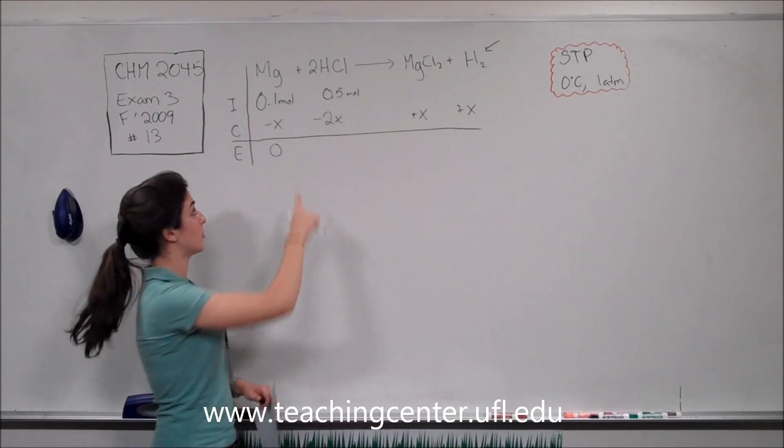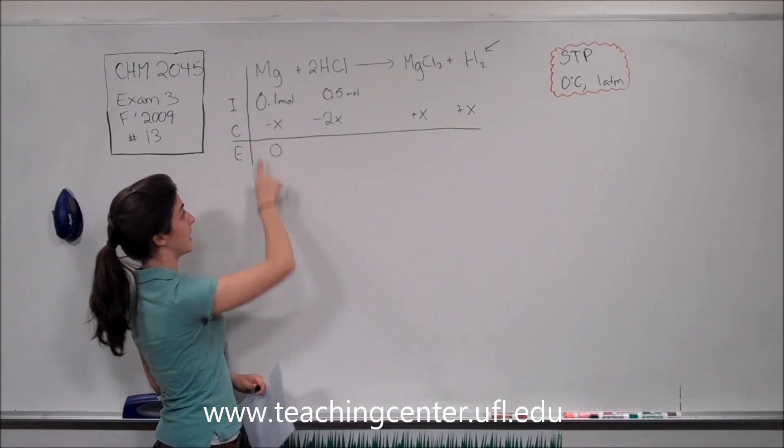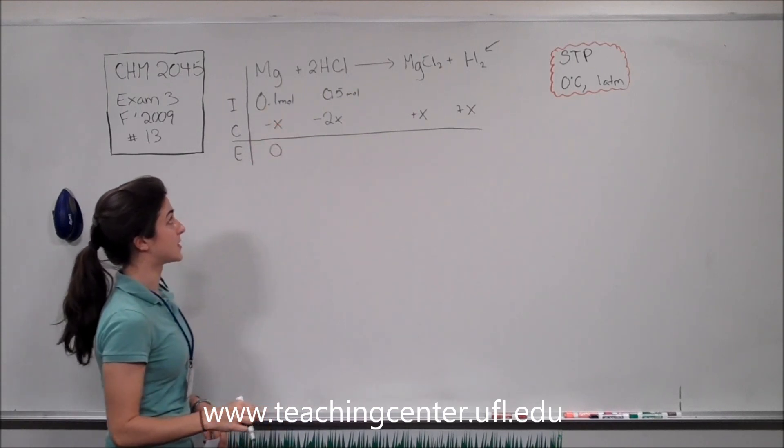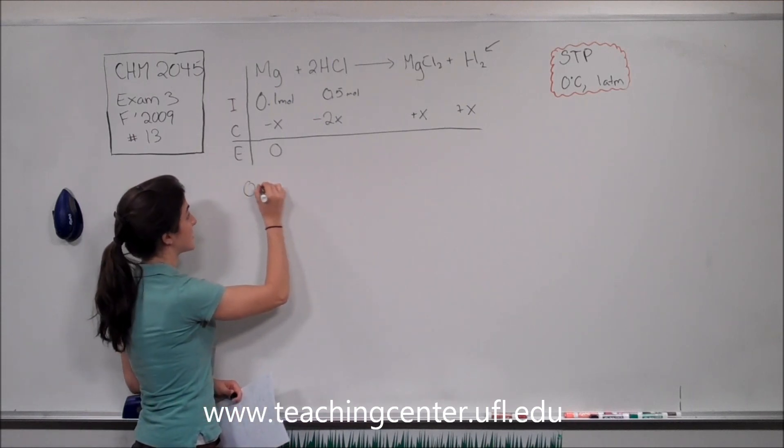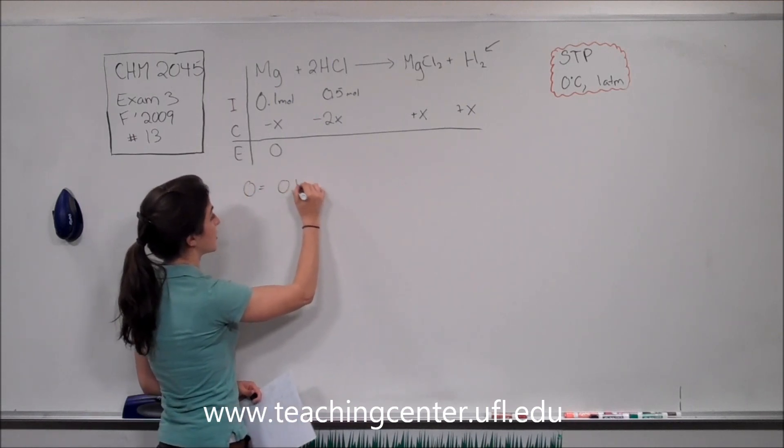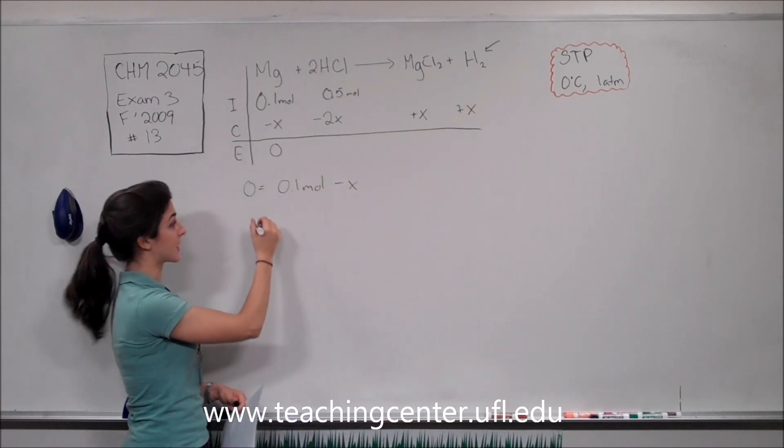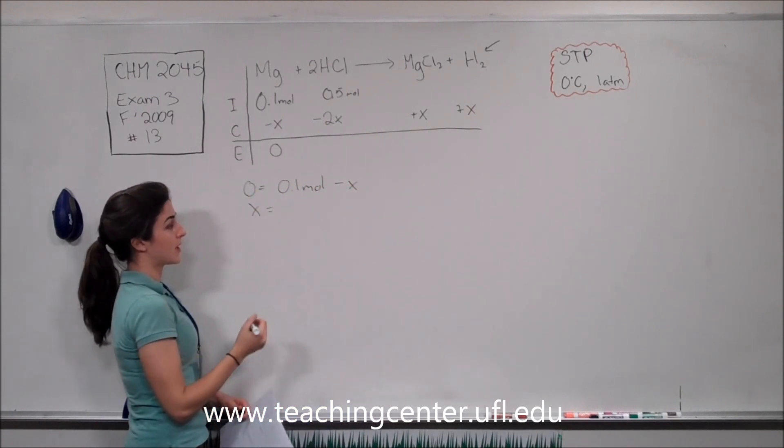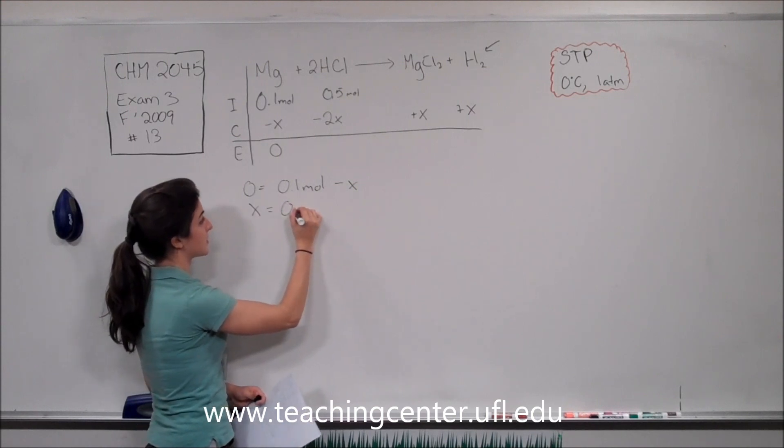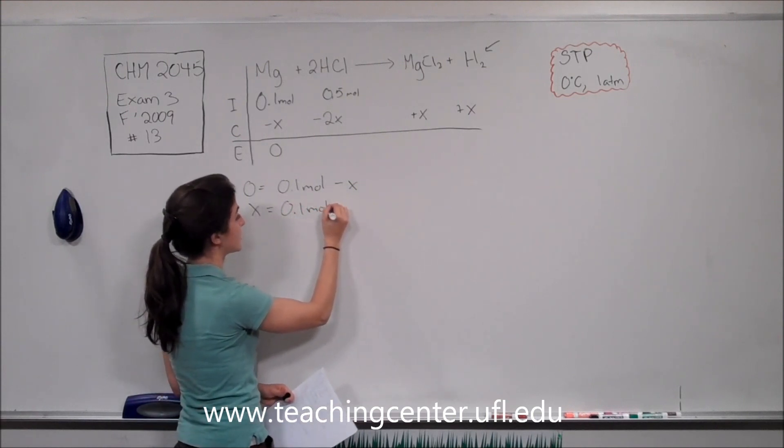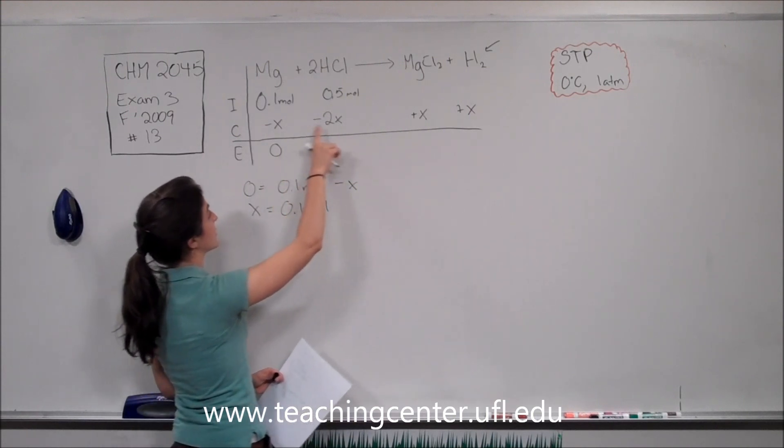Now we can figure out what the X equivalent is, because we have all three of these numbers for magnesium. So we know that 0 equals 0.1 moles minus X. Pulling X over here to the side, we have X equals 0.1 moles.